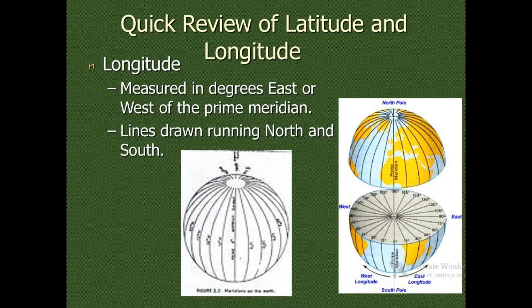Then there are longitudes. Longitudes are measured in degrees from east or west of the prime meridian. The prime meridian is called zero degrees or main longitude.